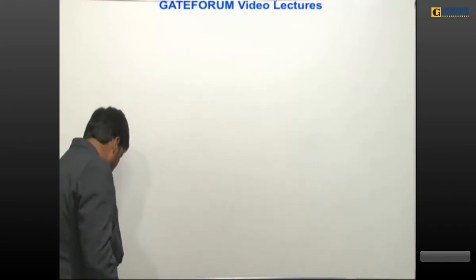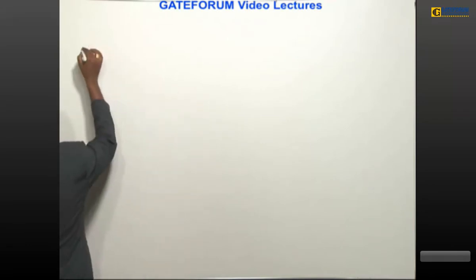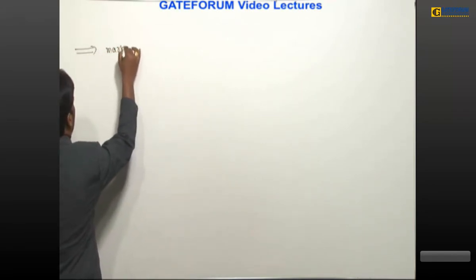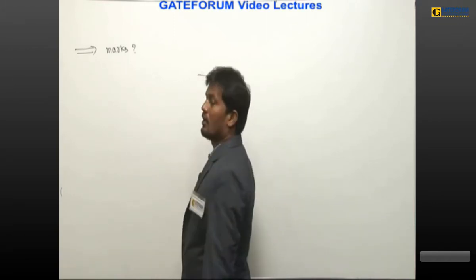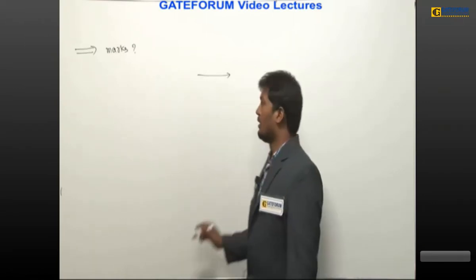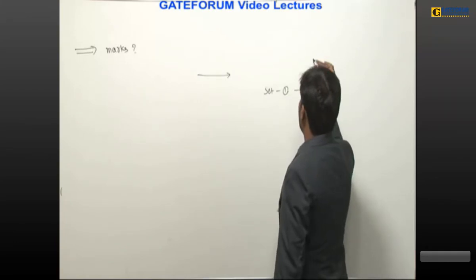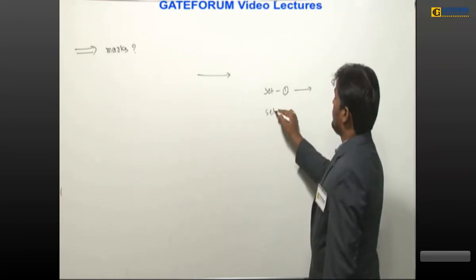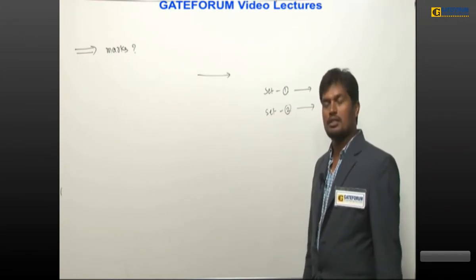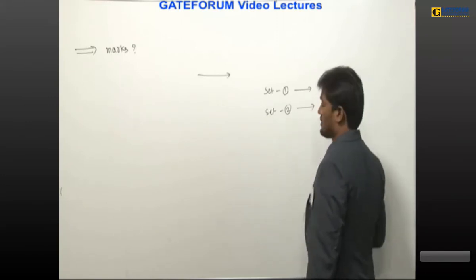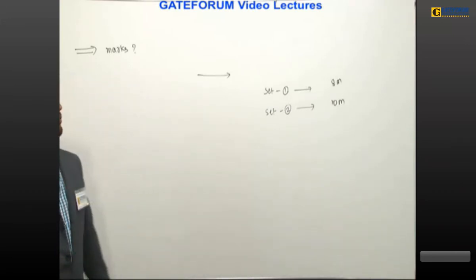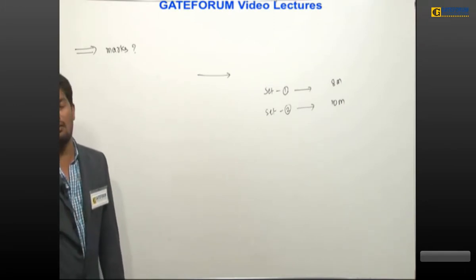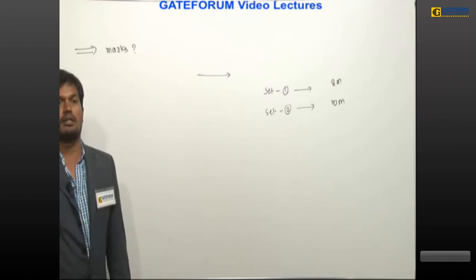Now, how to prepare — I have explained. First we discussed the syllabus, then how to prepare. Third: how many marks can we expect in GATE from control systems? The number of marks I cannot conclude exactly because right now the exam is online, not offline. In online exams we have different sets of question papers — in set 1 someone may get 8 marks from control systems, whereas in set 2 different questions are asked from the same subject and they can ask for 10 marks.